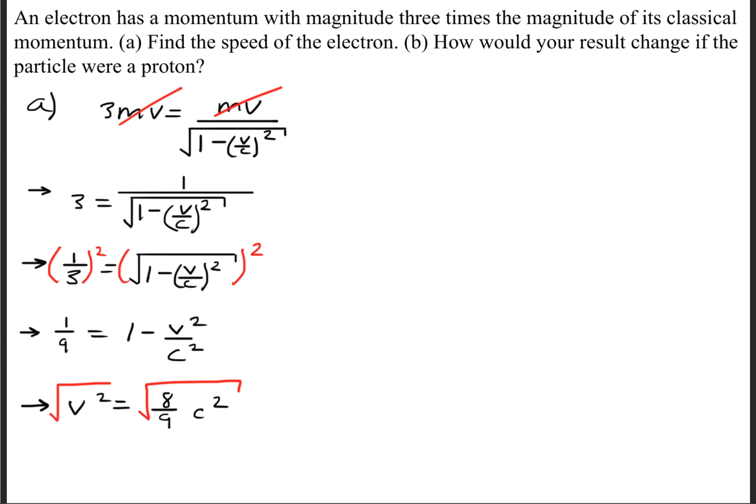Next we'll take the square root on both sides so that we get the velocity is equal to 2 times the square root of 2 divided by 3 times the speed of light, or if you want that in decimal we can get 0.943 times the speed of light.